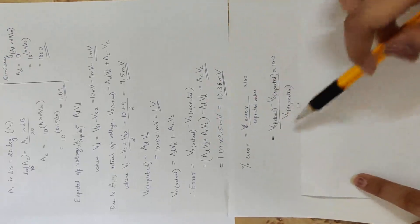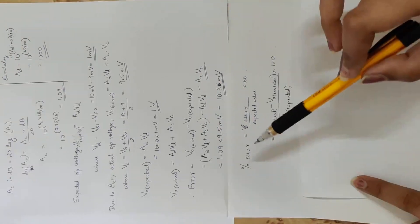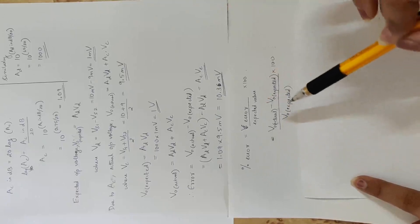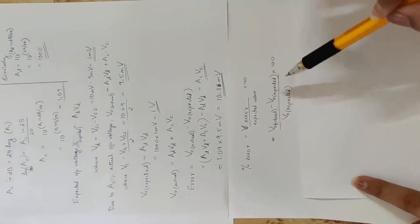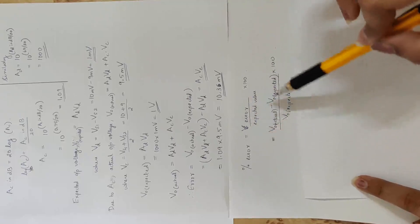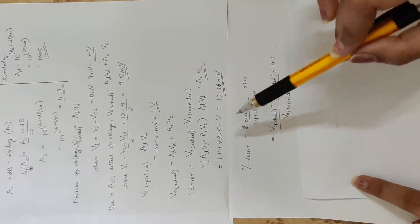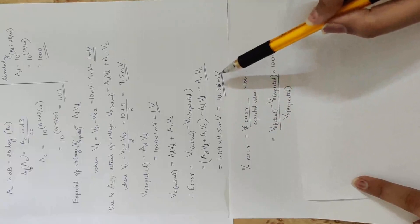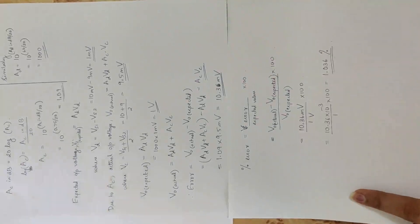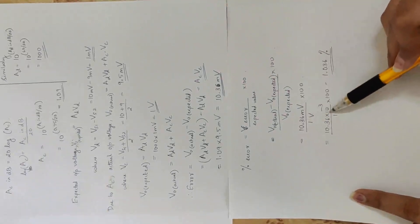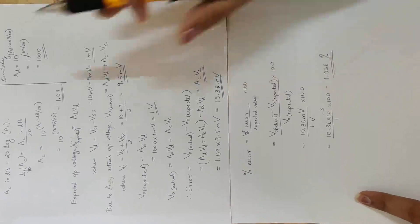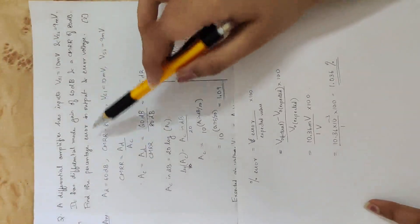Now we have the full equation. Generally, we represent the percentage error as: (actual minus expected) divided by expected, multiplied by 100. That is error divided by expected value into 100. The error is 10.36 millivolt and the expected value is 1.036 volt. Substituting, since millivolt equals 10 raised to minus 3, the percentage error in output is 1.036 percent.